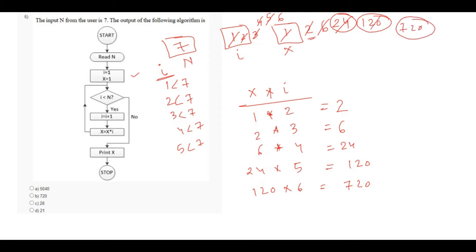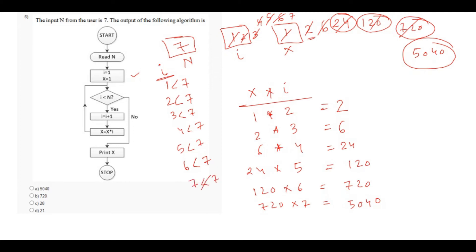Again, 6 less than 7, so it will be incremented by 1. Now the present value of i will be 7, and again it is 720 into 7, which will be 5040. So now the present value of x will be 5040. Is 7 less than 7? Obviously it is not true. If it is not true, then it says print x. So the value of x is 5040. Option A is correct.